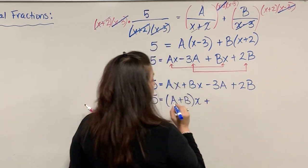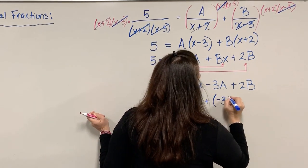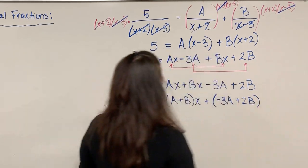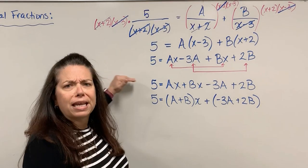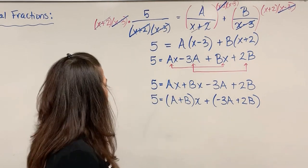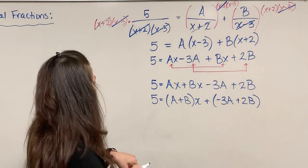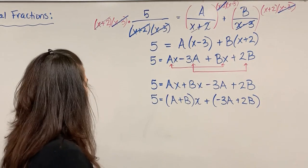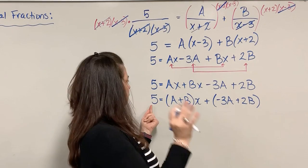Then these two terms don't contain an x, so I'll group those together as plus (-3A + 2B). I just did some intelligent regrouping. Now imagine we've got this equation. What we're saying is 5 equals this stuff on the right hand side. 5 is just a constant number by itself, there's no variables.